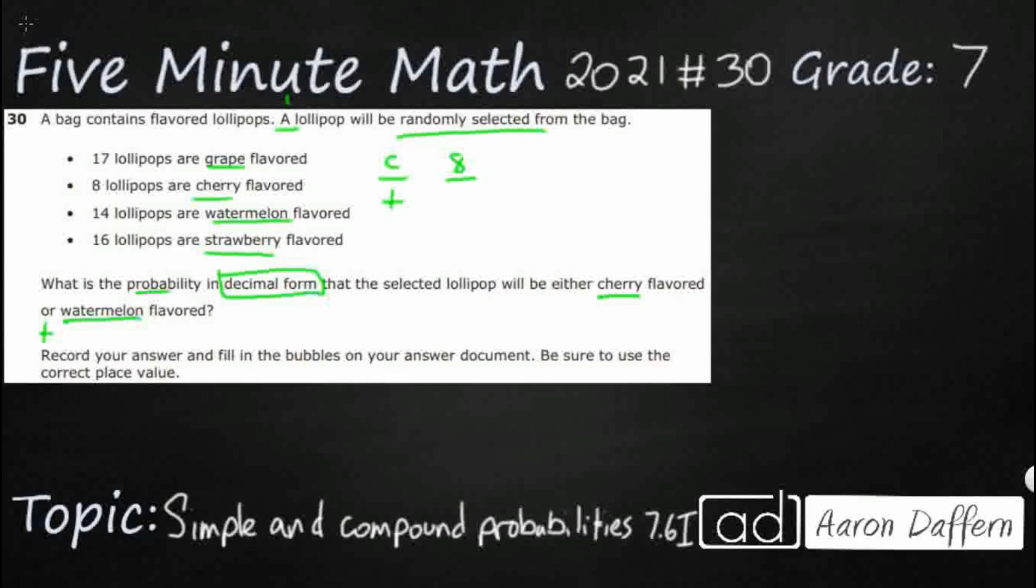Let me see, 17, 8, that's quite a lot, 14, 16. So that's 10, and that 8 and 7 is 15, 10 and 15 is 25. So 2, 3, 4, 5. Alright, so 55. So 8 out of 55. Can't reduce that.